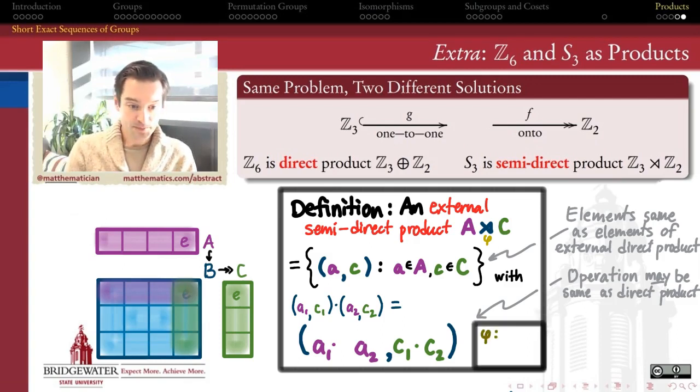And the something else that might happen is that we might have a homomorphism, call it phi, from C into the automorphism group of A. In other words, a way of assigning to every element of the group C an automorphism, so an isomorphism from A to itself, and to do that in a way that respects the operations of C and the automorphism group of A. So if I take a product of two elements of C, the automorphism that they correspond to is going to be the composition of the automorphisms associated with those two elements from C. This is the secret sauce.